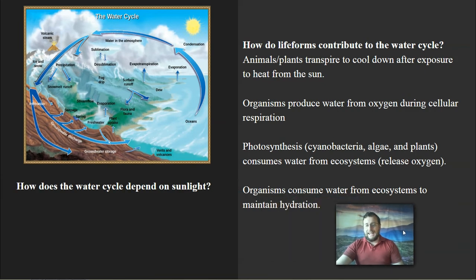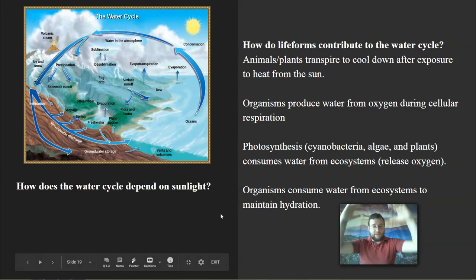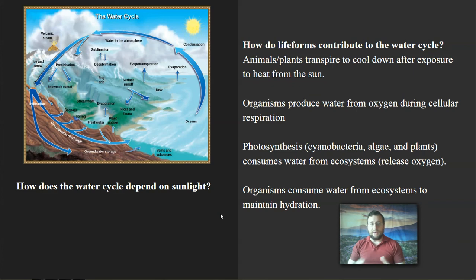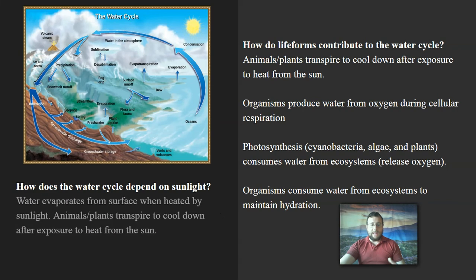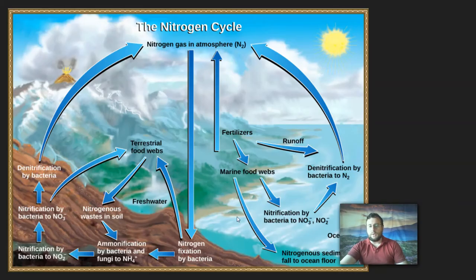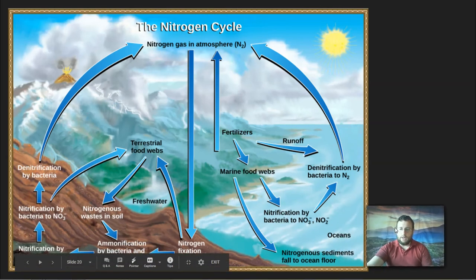How does energy play a part in the water cycle? Gravity pulls water down from clouds as precipitation and then as runoff into the ocean. Sunlight drives all the weather, but sunlight is also important because without it plants wouldn't be able to do photosynthesis, there would be no surface evaporation, and animals wouldn't transpire because there would be no heat. So all of those reasons require sunlight.